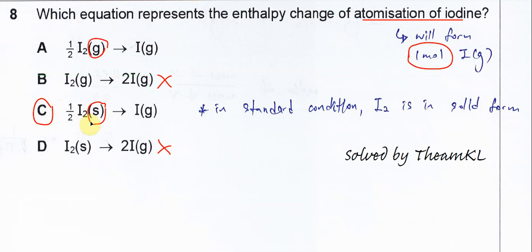So iodine solid eventually forms one mole of gas atoms. That's the equation that represents the enthalpy change of atomization.